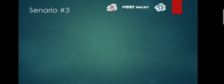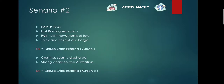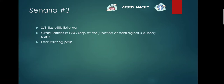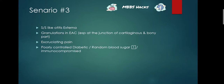Scenario three has similar signs and symptoms to otitis externa: pain in the external auditory canal, burning sensation, pain with jaw movements, and thick purulent discharge. Additionally, there are granulations in the external auditory canal, especially at the junction of the cartilaginous and bony parts. There is also excruciating pain, and the patient is diabetic with poorly controlled diabetes or a raised random blood sugar, or is immunocompromised. The diagnosis is malignant otitis externa.